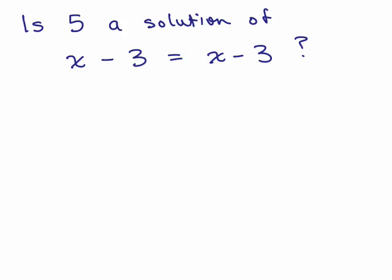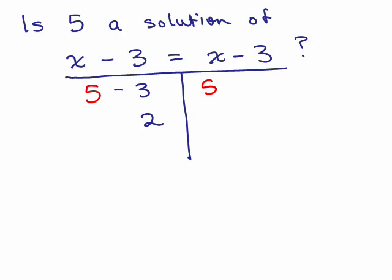Let's look at this one. Is 5 a solution of x minus 3 equals x minus 3? Let's underline it and put the bar. We're going to replace the x with a 5. So I have 5 minus 3 is 2, and then we're going to put 5 over here. 5 minus 3 is 2, so yes, 5 is a solution.